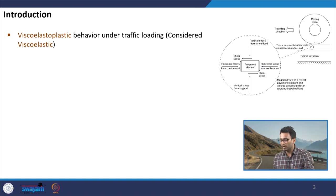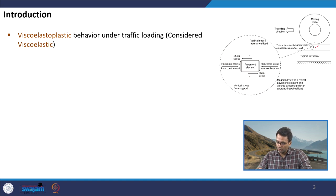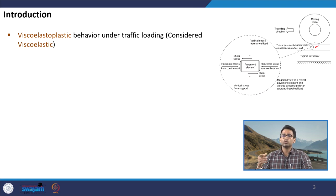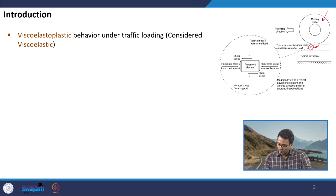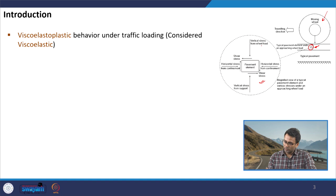If we consider an element of a bituminous mixture placed as the surface layer of the pavement and we want to see what types of stresses will be induced in that particular element — this picture tries to highlight the stresses which are generated. This is the element, this is a moving load, and various stresses have been identified. One stress will be the vertical stress from the wheel load.